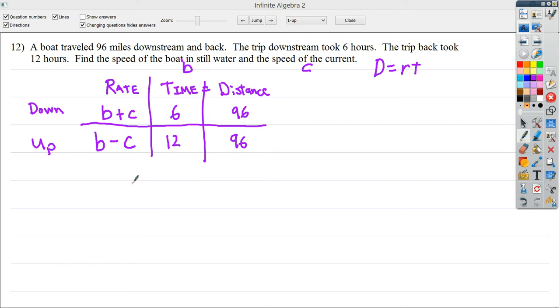Now, from here, I can make a pretty simple system by setting it up like 6 times B plus C, so time times rate here, equals 96. I'm going to do a distributive here and sort of solve it that way, but I'm going to say right now that you can divide both sides by 6, which would give you B plus C equals 16, I think. And then that may be smaller numbers for you, and it might make it easier.